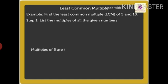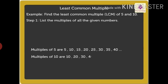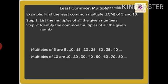Multiples of 5 are 5, 10, 15, 20, 25, 30, 35, 40, and so on. Multiples of 10 are 10, 20, 30, 40, 50, 60, 70, 80, and so on. Step 2: Identify the common multiples of all the given numbers.